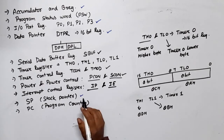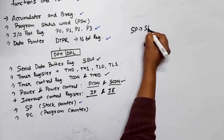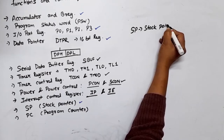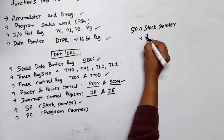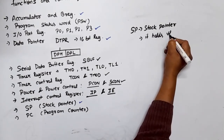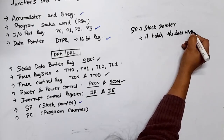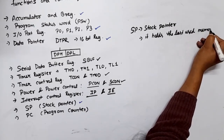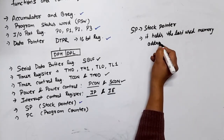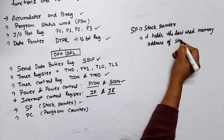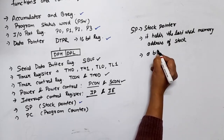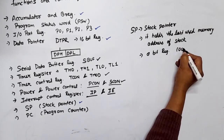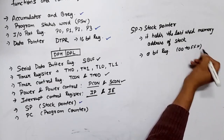Next is the Stack Pointer (SP). It holds the last used memory address of the stack. The stack is used for storing temporary data. This is an 8-bit register, so its value can range from 00h to FFh.